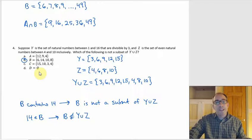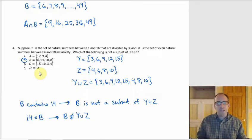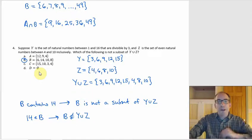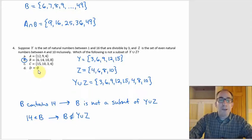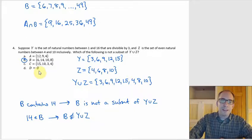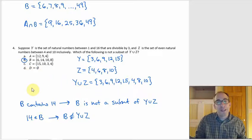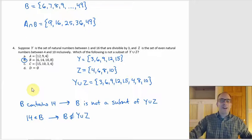Option C contains 15, 3, 4, and 10 — 15 is divisible by 3, 3 is divisible by 3, and 4 and 10 are the inclusive endpoints of Z, so all fine. Option D is the empty set — and it's worth noting again that the empty set is a subset of every set. Since Y union Z is itself a set, the empty set is a subset of it. The empty set has no elements, so every element in it is in Y union Z — or rather, there's nothing in D that's not in Y union Z.